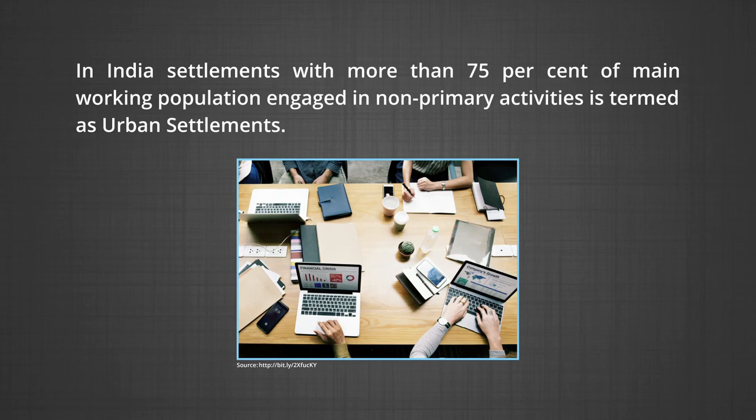Occupational structure: In some countries such as India, the major economic activities in addition to the size of the population are also taken as a criteria in designating a settlement as urban. Similarly, in Italy, a settlement is called urban if more than 50% of its economically productive population is engaged in non-agricultural activities. In India, settlements with more than 75% of male working population engaged in non-primary activities are termed as urban settlements.